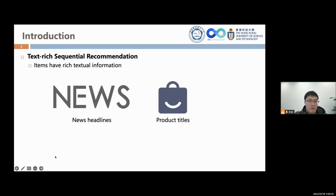In this paper, we want to solve the problem of using large language models for text-rich sequential recommendation. In the text-rich sequential recommendation problem, the items can have rich textual information, for example, the news headlines and product titles.